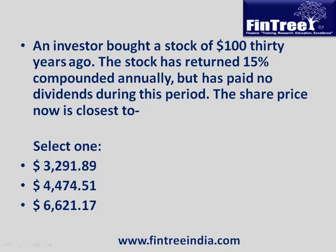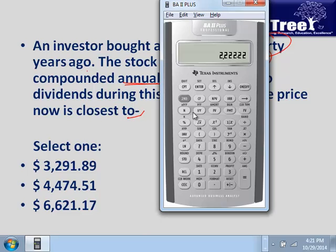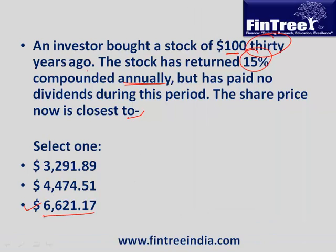An investor bought a stock for $100 thirty years ago. The stock has returned 15% compounded annually and has paid no dividends. What is the share price now? Second, clear TVM: PV is 100, N is 30, IY is 15, compute future value — the answer is $66,211 approximately.